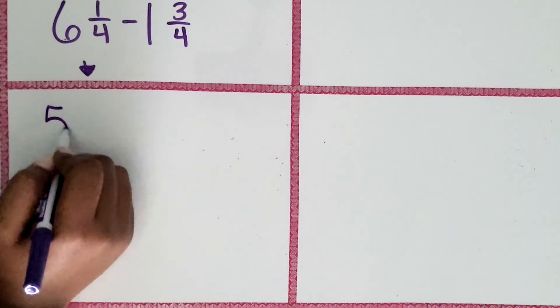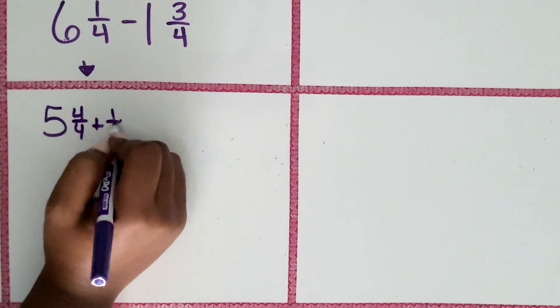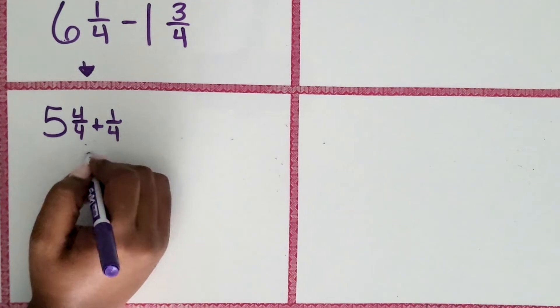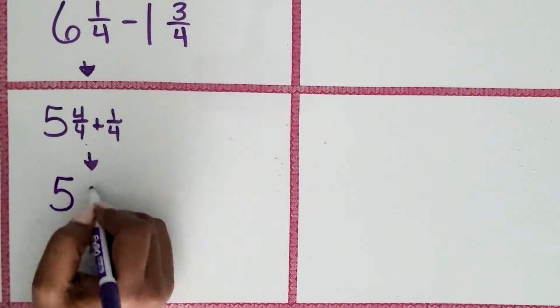It's the same as six wholes plus one-fourth. So we change the four-fourths. We keep five and we put four-fourths plus one-fourth. That is five-fourths.